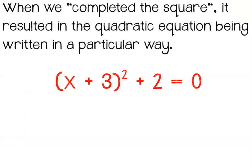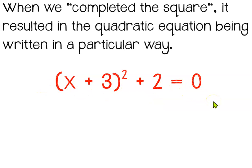Let's begin. In our previous lesson, when we completed the square, it resulted in a quadratic equation being written in this particular way. A completed square has a quantity — a factorization that is a repeat factor, x plus 3 and another x plus 3. What you're going to learn today is that this has a special name: it's called the vertex form. When it's written in this format, it can tell you the vertex just by looking at it — you don't even need to graph it.